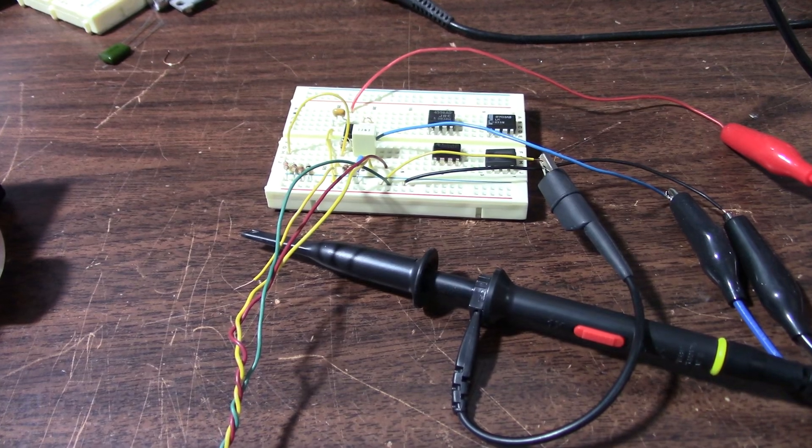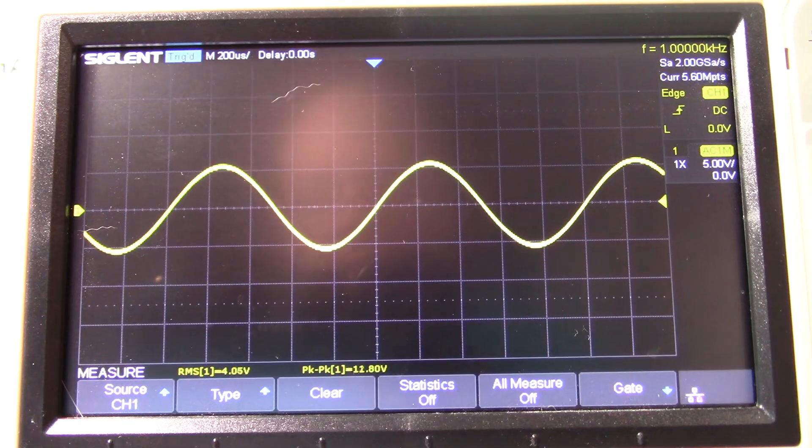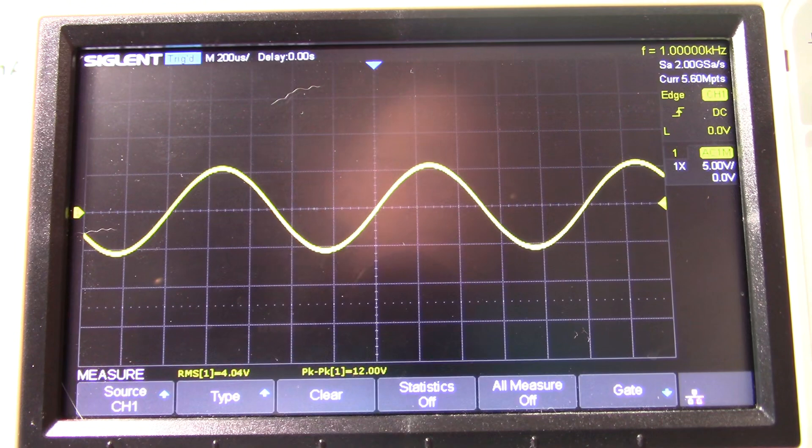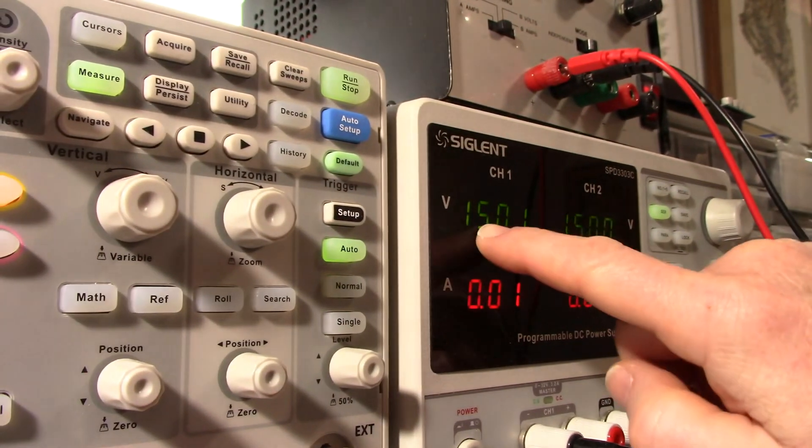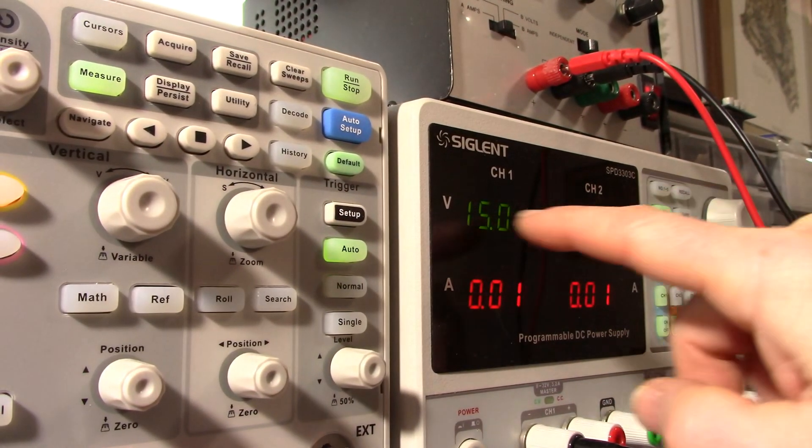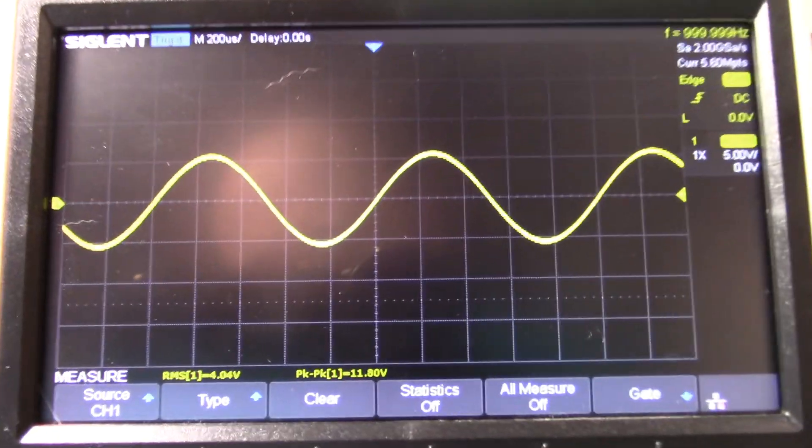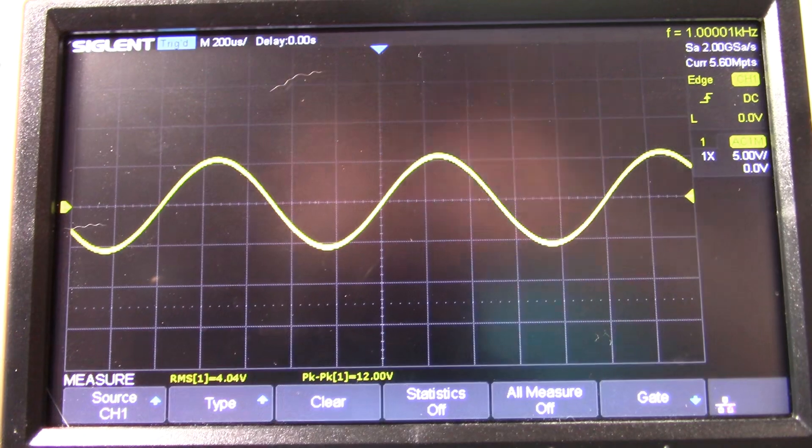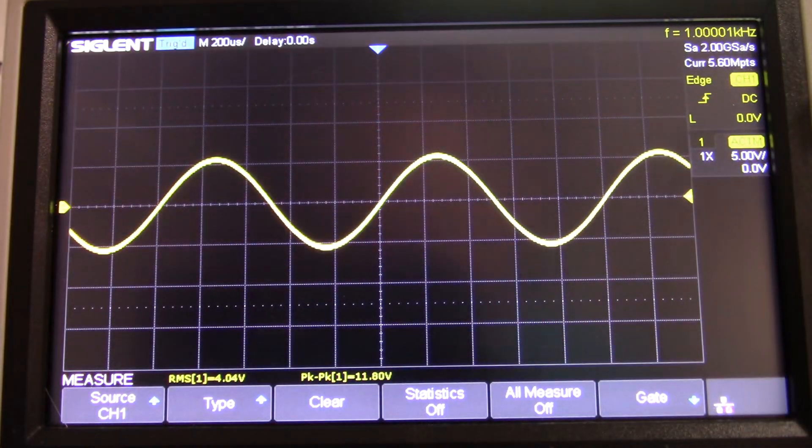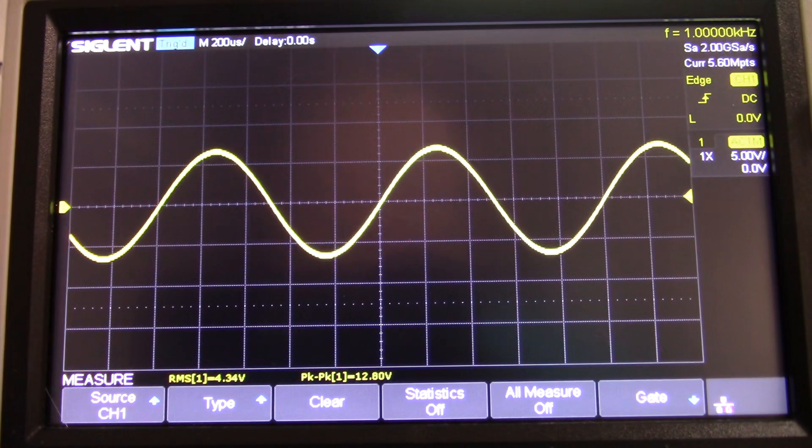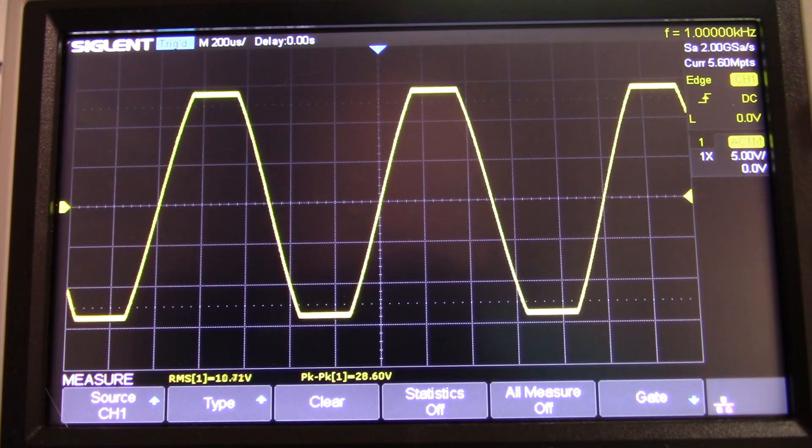Okay, the first op-amp under test will be the NE5532. You can see the signal going there, have the power supply turned on, serial mode plus and minus 15 volts. Let's get on the scope here, see if there's less glare with that off. So adjust the signal up.